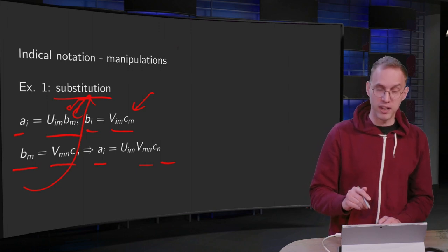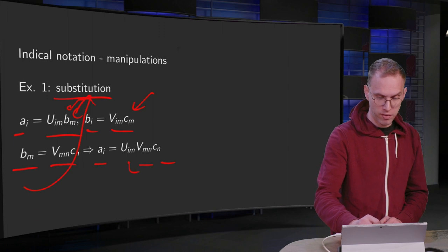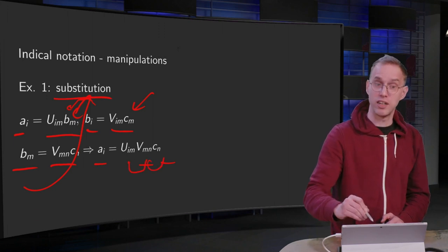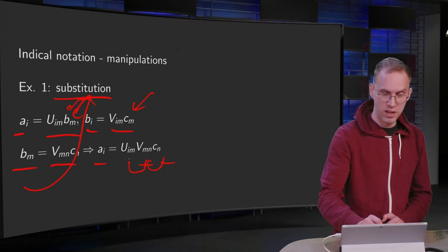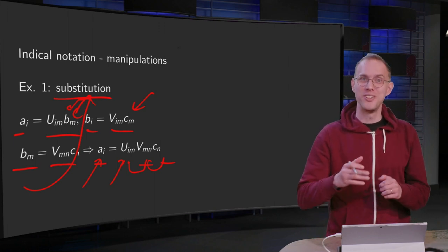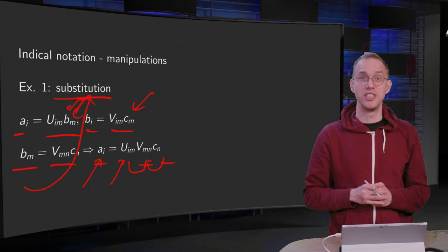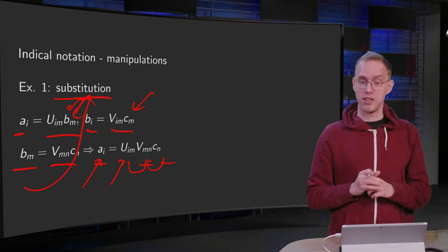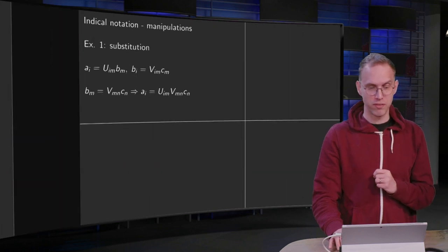Note by the way that the indices are now balancing. So we have an m occurring twice which is summed over, and n occurs twice which is summed over on the right-hand side. So on the right-hand side only an i is left; on the left-hand side we also only have an i. So it's always good to check after some of these manipulations whether the indices left and right of your equality sign still balance. That was the first example.